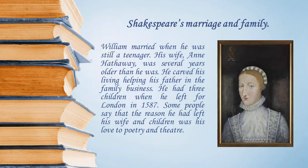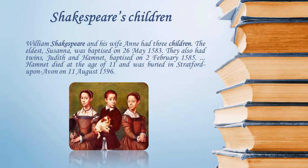The bequest of the second best bed is not in itself unusual, as wills were not places for the expression of personal feelings. The best bed — or indeed the best of any type of item — was usually regarded as an heirloom to be passed to the major heir, his daughter Susanna. William and Anne Shakespeare had three children. Their first child was Susanna, born a mere six months after the wedding of her parents, christened on May 26, 1583.